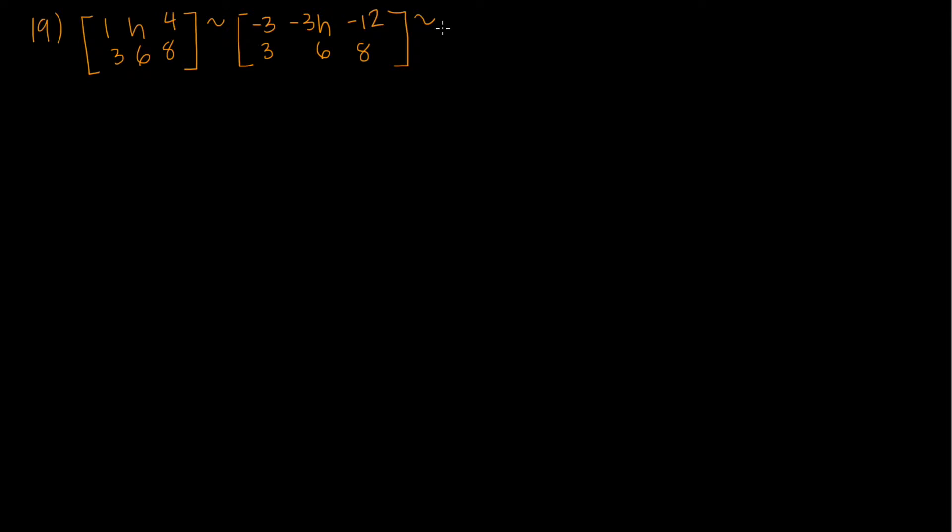Now the next step is to replace row two with row one plus row two. So what that looks like is, what is negative three plus three? Well, that's zero. What is negative three h plus six? That's just six minus three h. We cannot combine them because they're not like terms. And what is negative twelve plus eight? Well, that's just negative four. And the top row remains the same.